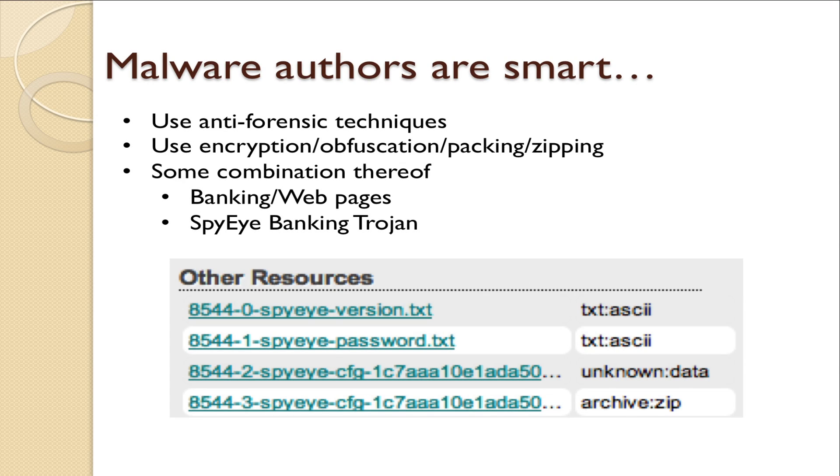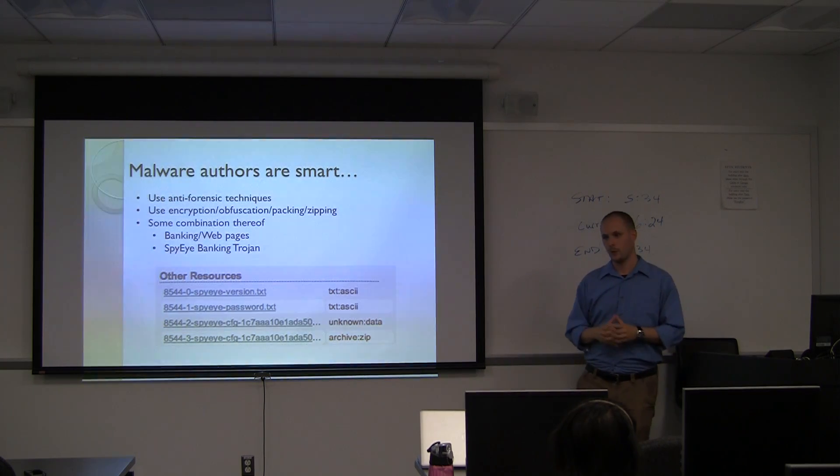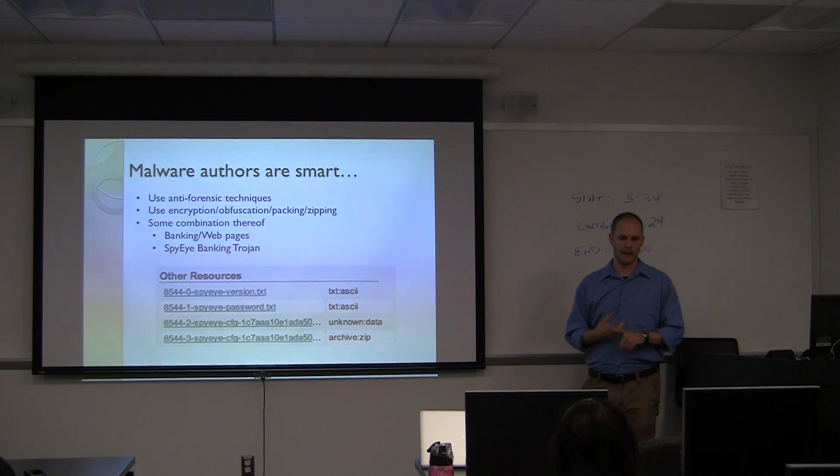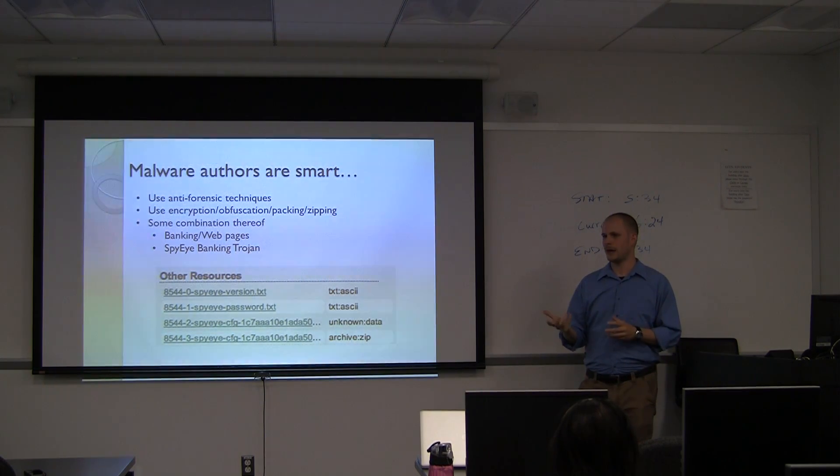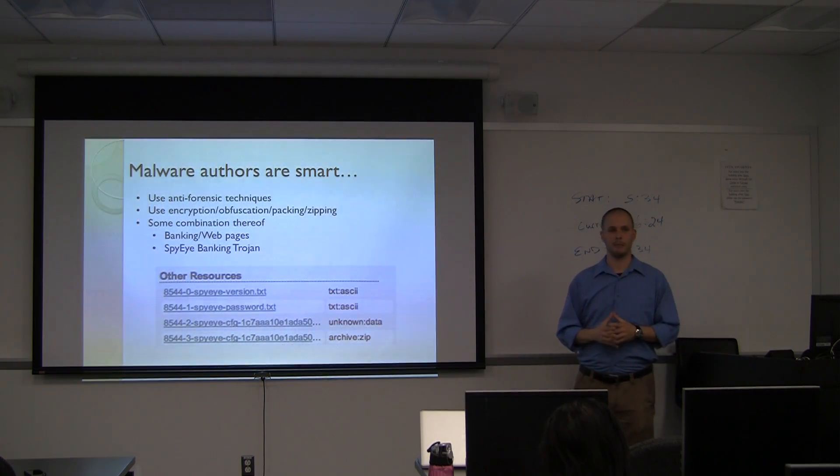Now, malware authors will also use anti-forensic techniques. A lot of the times, they will be aware of the fact that forensics people, such as yourself, will actually be investigating what it is that they're doing. Malware will often be reverse engineered with what's known as a debugger, which is essentially a program that takes an executable and attempts to return the machine code. So, when you do that, debuggers have specific characteristics and those characteristics can be looked for in the file. Another example is encryption, obfuscation, packing, zipping, like I've already mentioned.